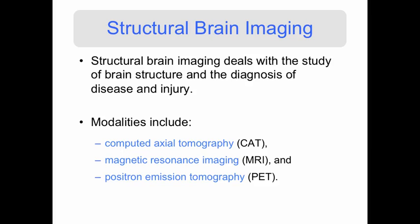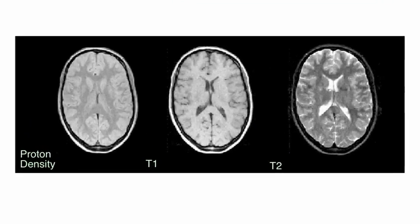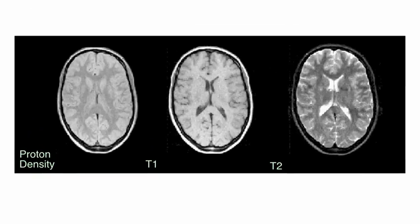Modalities for structural imaging include computed axial tomography or CAT scans, magnetic resonance imaging or MRI, and positron emission tomography or PET. Here are examples of a series of MRI scans taken over the same slice of the brain.